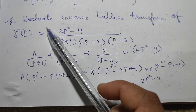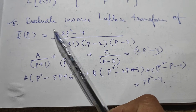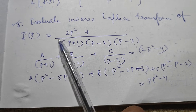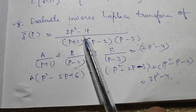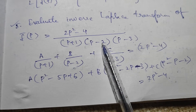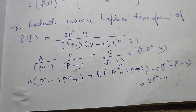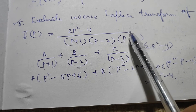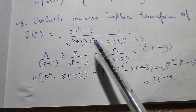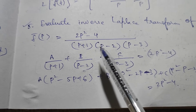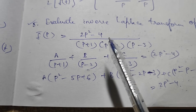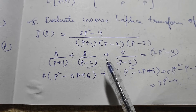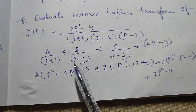Hi everyone, today we will evaluate the inverse Laplace transform of f bar of p, which equals 2p² - 4 divided by (p+1)(p-2)(p-3). Whenever you see any function like this in terms of p, you can solve it in two ways: one is by the heuristic method and another is by the complex inversion formula. Today we will see the heuristic method.